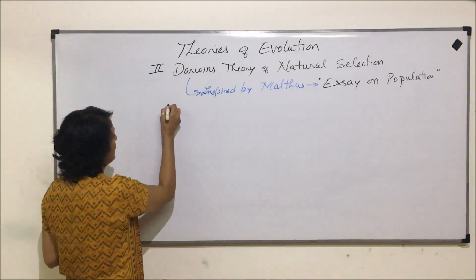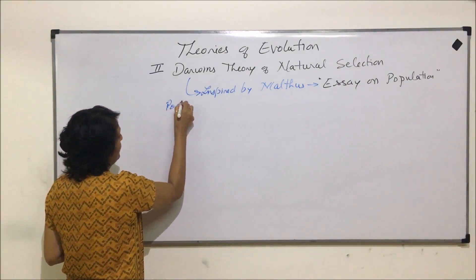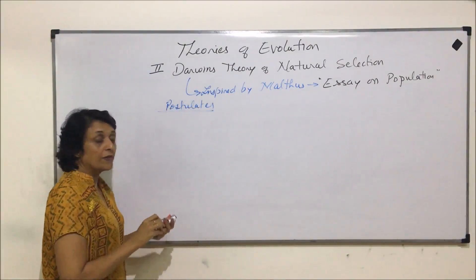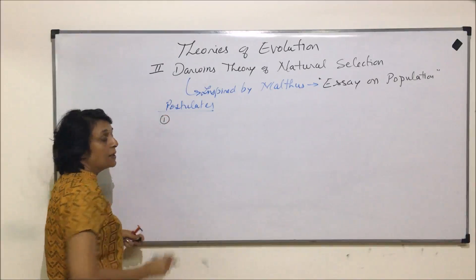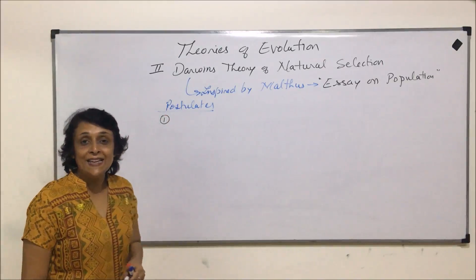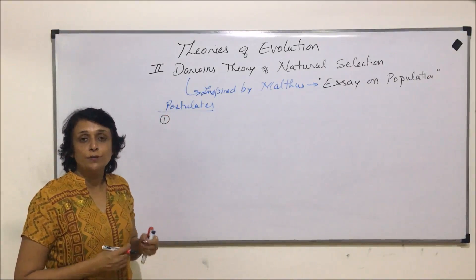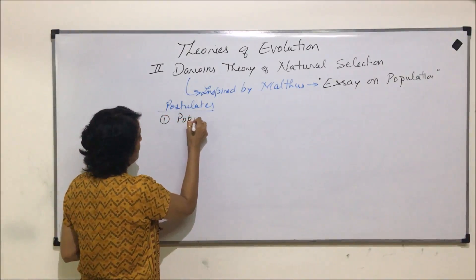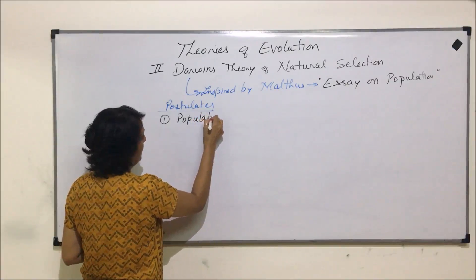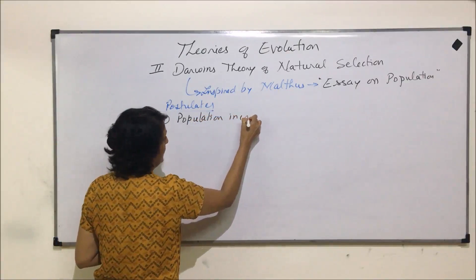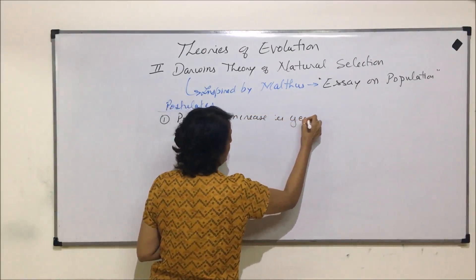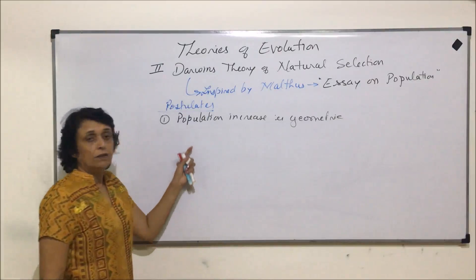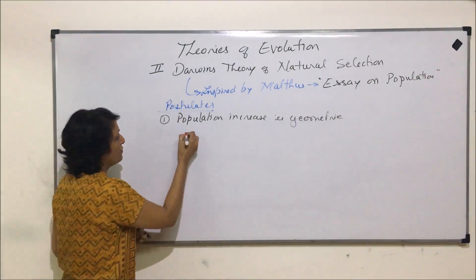Let us take these postulates. The first postulate says that population increase is always geometric. Whenever a population increases, it is always geometric. Two examples that we can take here: one is of paramecium.